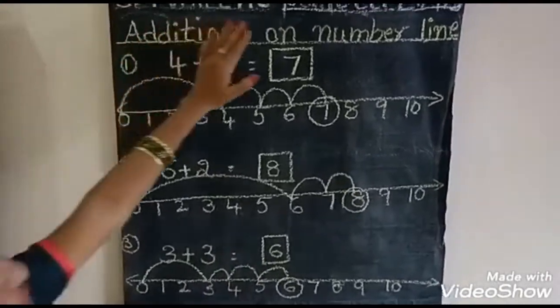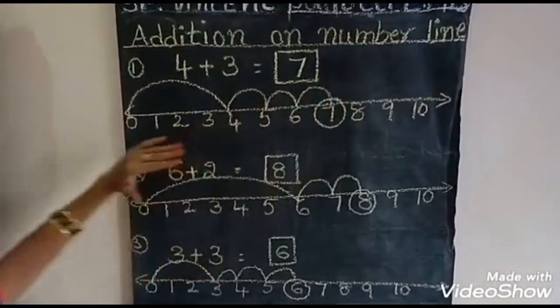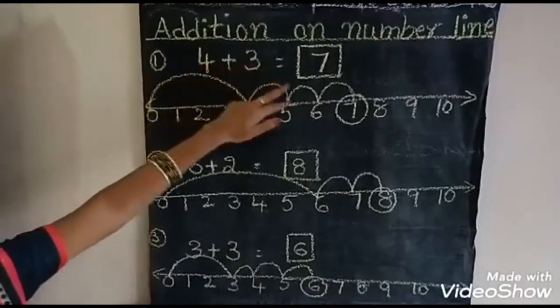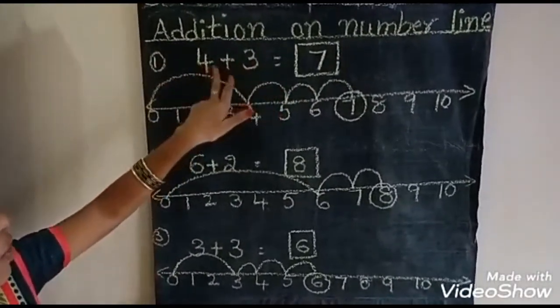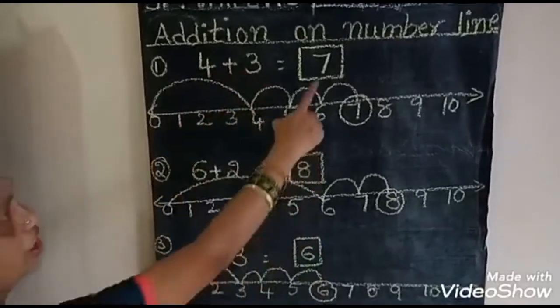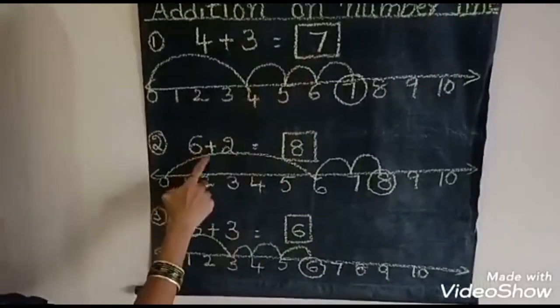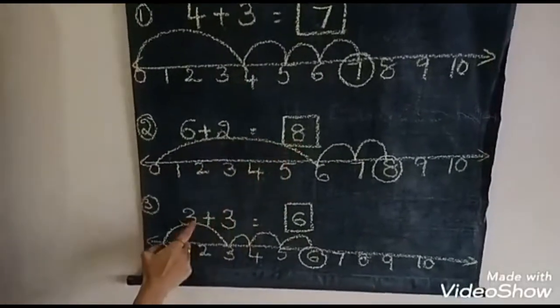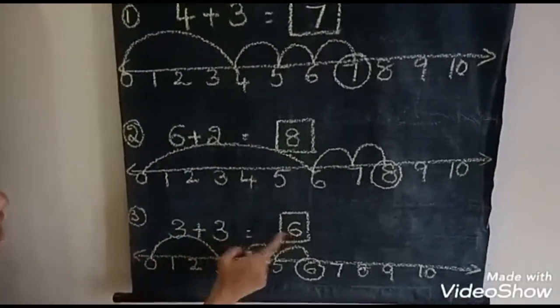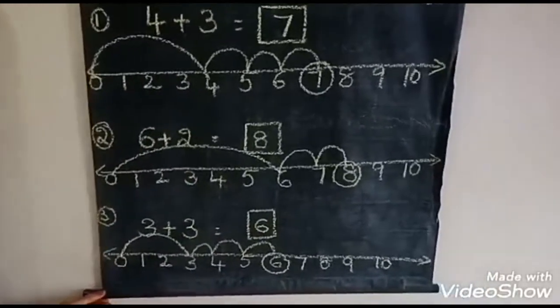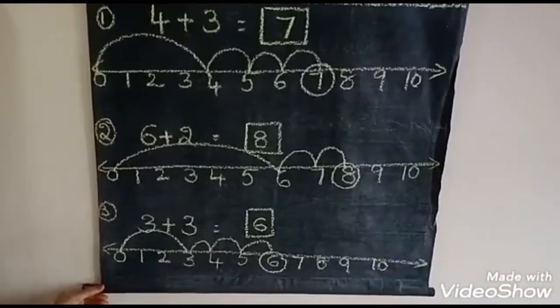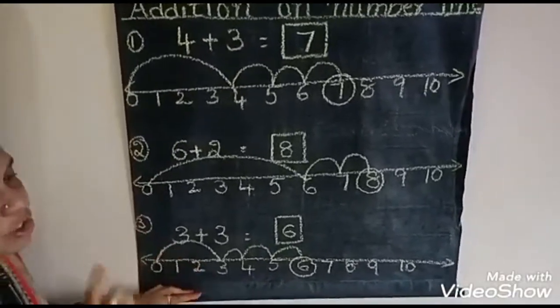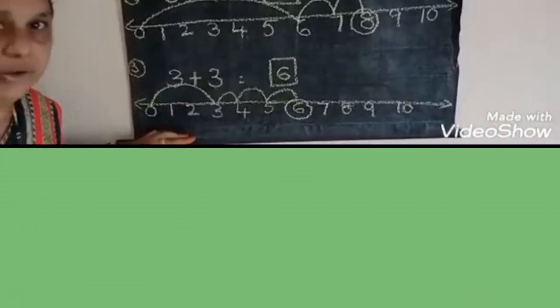This, additions on number line. Tem. One time. Children, you write in your CWs one time. Okay, thank you.